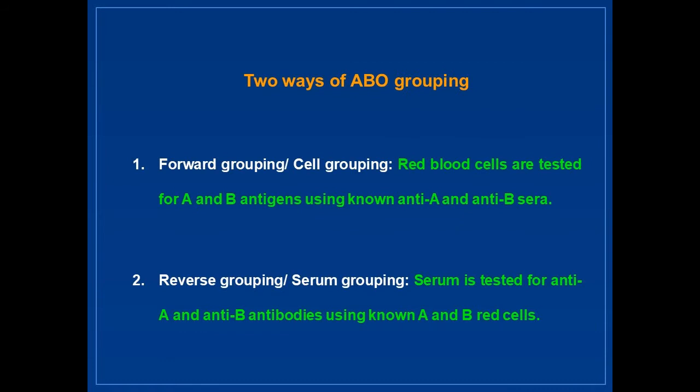ABO grouping can be done in two ways. One is forward grouping or cell grouping, in which red blood cells are tested for A and B antigens using known anti-A and anti-B sera. Second is reverse grouping, that is serum grouping, in which serum is tested for anti-A and anti-B antibodies using known A and B red cells.